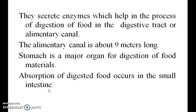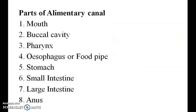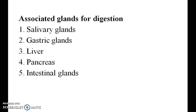The stomach is the major organ for digestion of food material. The absorption of digested food occurs in the small intestine. Parts of the alimentary canal include the mouth, salivary gland, liver, stomach, small intestine, and large intestine. The associated digestive glands are the salivary glands, gastric glands, liver, pancreas, and intestinal glands.